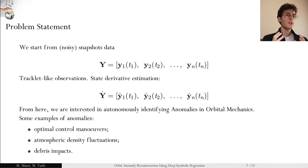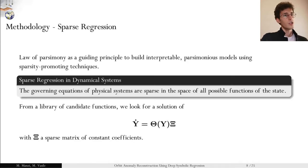In our problem, we start with a number of snapshots of observations of the system, of the states of the system. Assuming these are tracklet-like observations, we can construct via finite differencing the state derivative of the system. We can make use of this data to autonomously identify anomalies in orbital mechanics such as optimal control maneuvers, atmospheric density fluctuations due to space weather events, and behaviors resulting from space debris impacts.